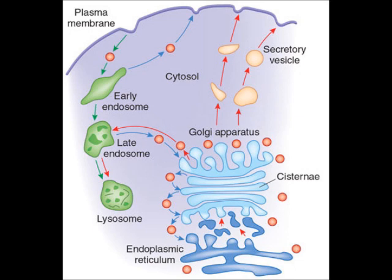There is also a retrograde transport from the Golgi back to the endoplasmic reticulum, carried out through a protein called COPI, which is quite important. For example, proteins that are not properly folded in the Golgi network cannot be allowed to proceed — they must be sent a step back to be correctly modified and return again to the chain. This is a way to ensure that proteins are as correct as possible, and that is practically the main function of the Golgi apparatus.